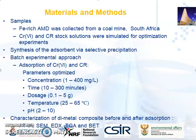In order to achieve the outlined aim and objectives, the following materials and methods were used. Iron-rich AMD was collected from a coal mine in South Africa. Chromium-6 and Congo red dye solutions were simulated for optimization experiments. The di-metal composite was recovered and synthesized via selective precipitation. For the adsorption of chromium-6 and Congo red dye, a batch experimental approach was adopted where concentration, pH, agitation time, temperature, and dosage were optimized. FTIR, SEM, EDX, TGA, and BET were used for the characterization of the di-metal composite before and after adsorption.